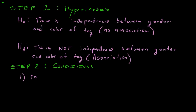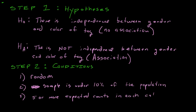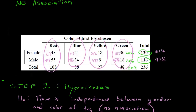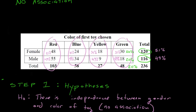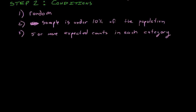The same three conditions apply. Condition one: it must be a random sample to avoid bias. Condition two: the sample size must be under 10% of the population. Condition three: you need five or more expected counts in each category. Note that the observed values in the chart are not what we check — we must verify the expected counts are all five or more, which we can only do after computing them.